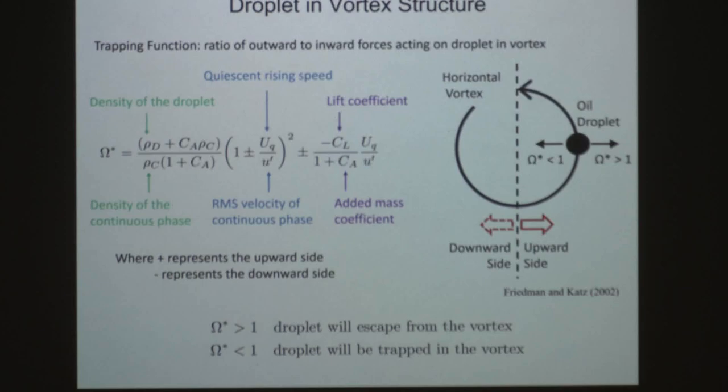If omega is less than one, that droplet will tend to move inward and remain trapped by the vortex. This depends on factors such as the density of the droplet, the density of the seawater, the rising speed of the droplet in still water, and the velocity of the vortex. We applied this simple model to our situation.